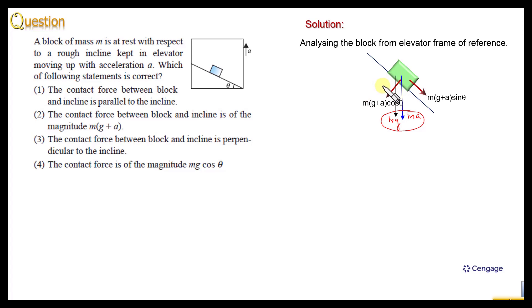Normal reaction will act on the object perpendicular to the surface toward the object that is N and friction force will be static in nature, will act opposite due to the sliding tendency in upward direction. This is the friction force, small f.